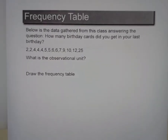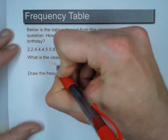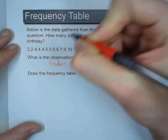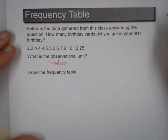This says: below is the data gathered from this class answering the question, how many birthday cards did you get in your last birthday? So what is the observational unit? That's going to be students. So we want to create a frequency table.